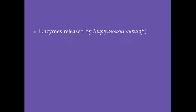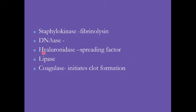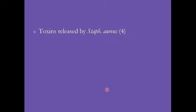Enzymes released by Staphylococcus include staphylokinase, DNase, hyaluronidase, and lipase. Most importantly, coagulase. Hyaluronidase is the spreading factor — it destroys hyaluronic acid and allows Staph aureus to spread through connective tissue from its initial site of inoculation. Toxins released include exfoliative toxin, leukocidins, hemolysins, and staphyloenterotoxin.